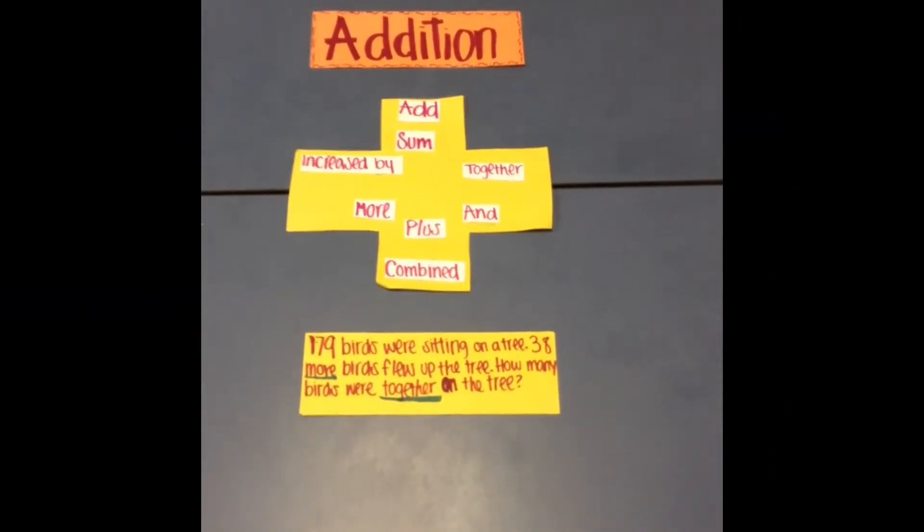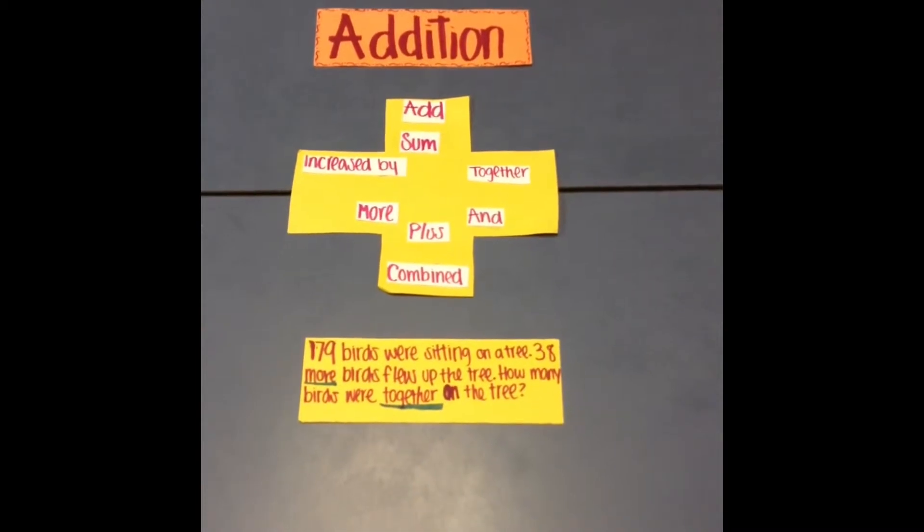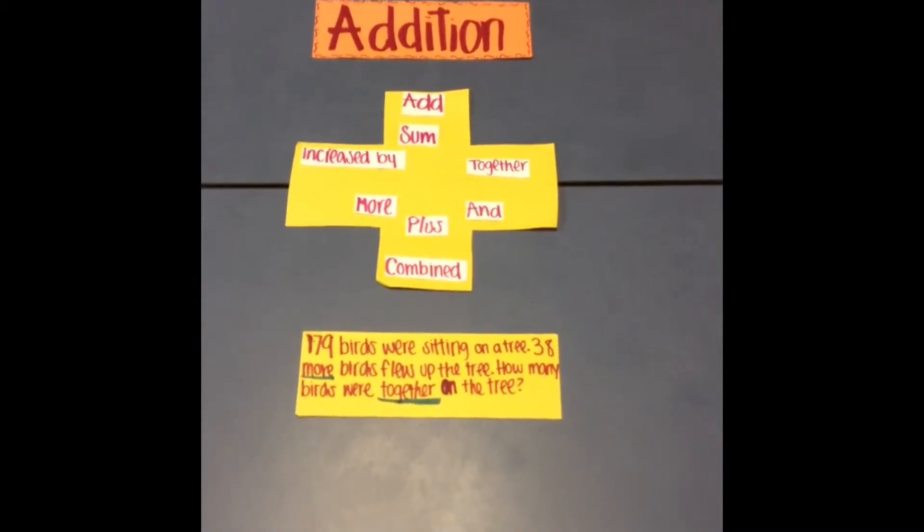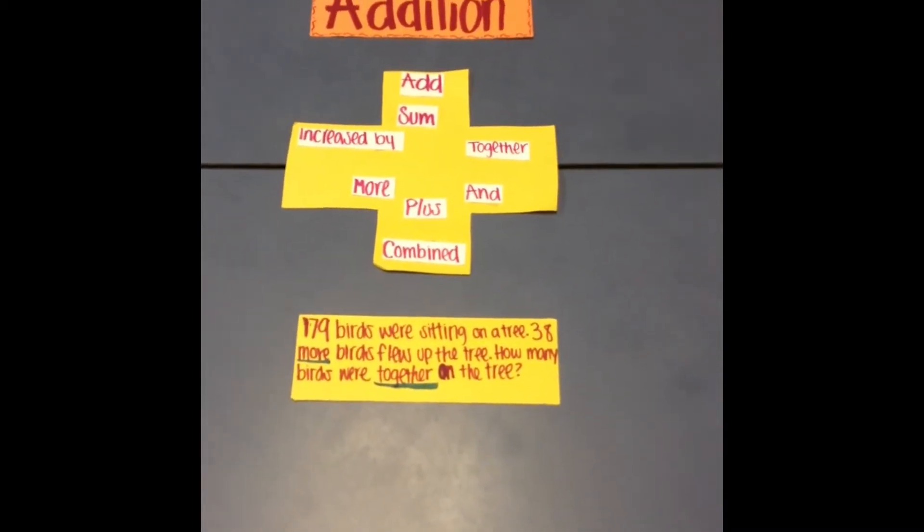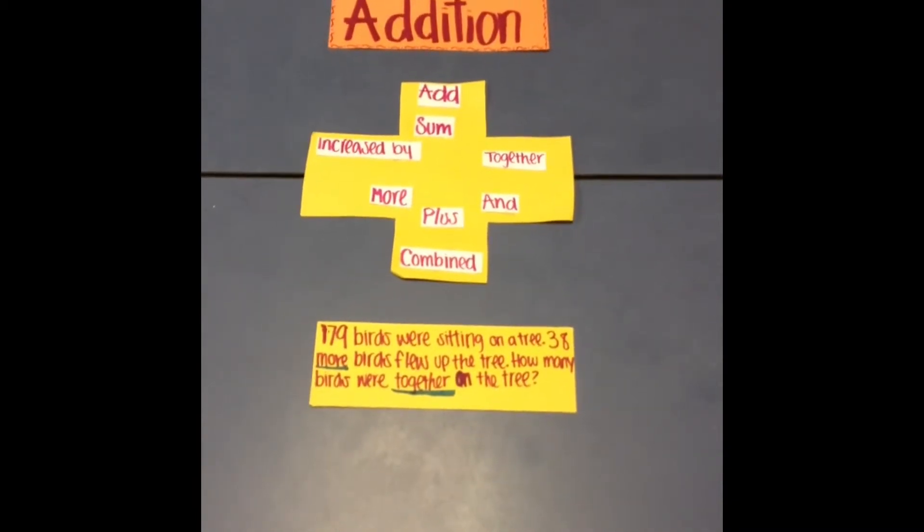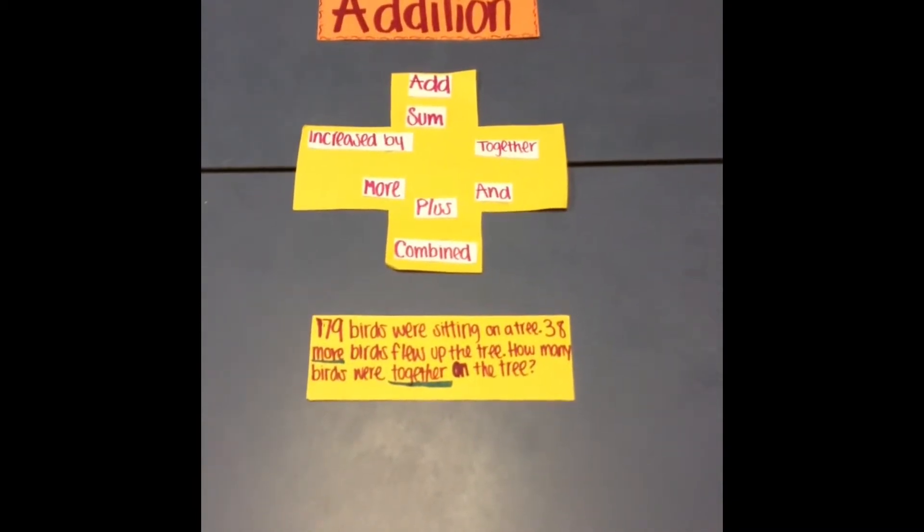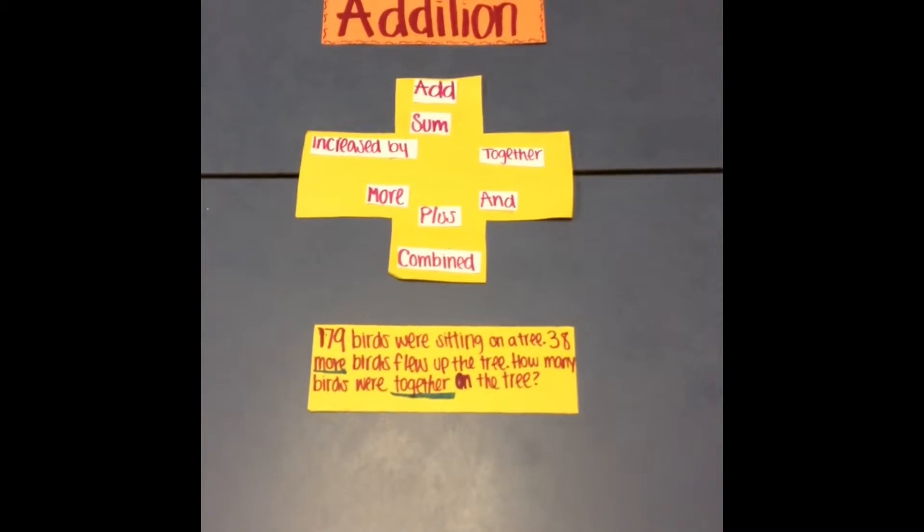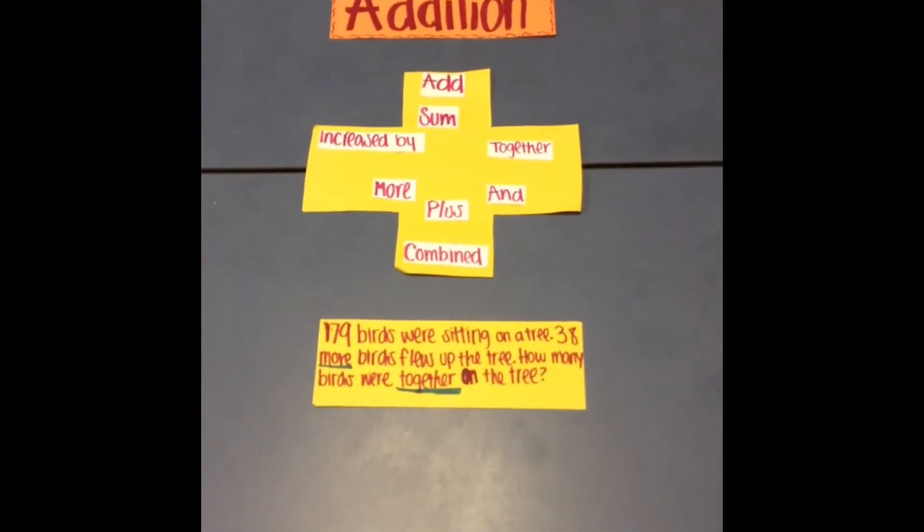A word example for addition may be 179 birds were sitting on a tree. 38 more birds flew up the tree. How many birds were together on the tree? So your keywords here are more and together.